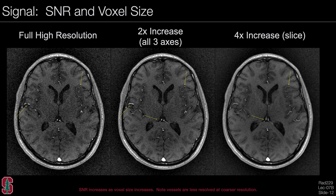Looking at SNR with different voxel sizes: the full high-resolution image is on the left. If we increase the voxel volume by a factor of two along all three axes, the SNR improves and the noise level goes down, with some blurring due to coarser resolution. Increasing the voxel size by a factor of four gives even more SNR improvement, though now thicker slices produce a projection effect through small vessels. This confirms that SNR goes up proportionally with voxel size.